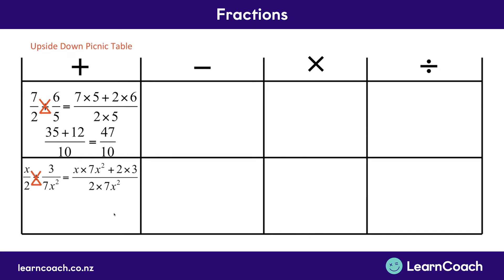Simplifying this all down now, we've got x times 7x squared, which gives 7x to the power of 3, plus we've got 2 times 3, and 2 times 3 is 6, and this is all divided by 2 times 7x squared. Now 2 lots of 7x squared is 14x squared. And this is our final answer — it's simplified down as much as it possibly can be.